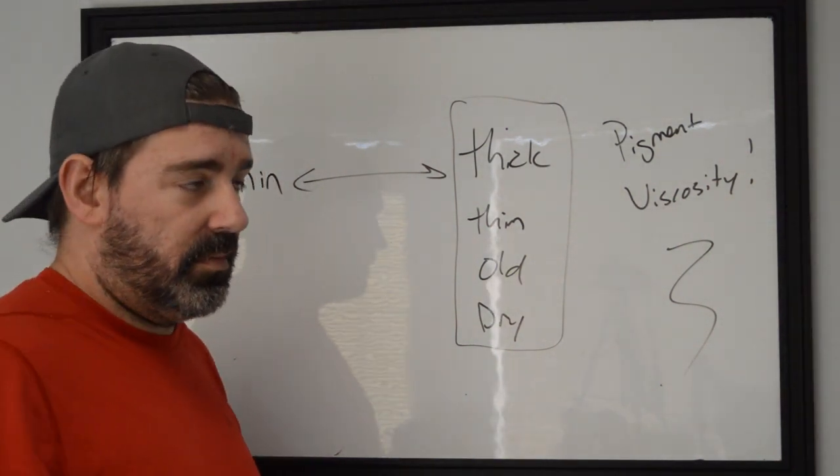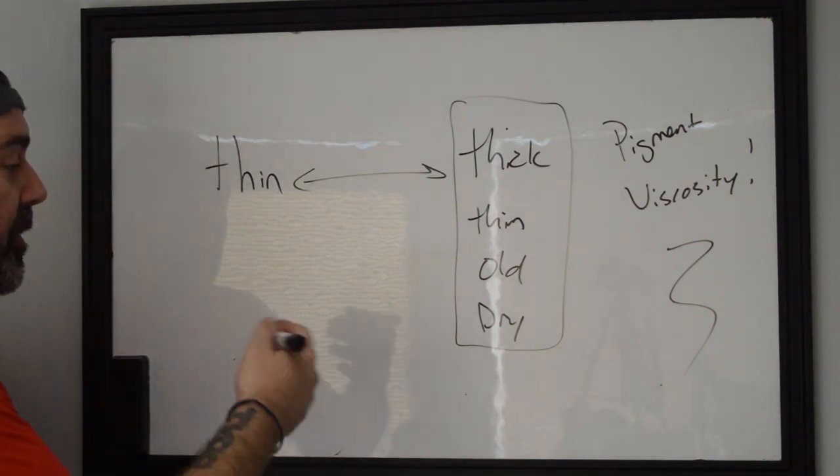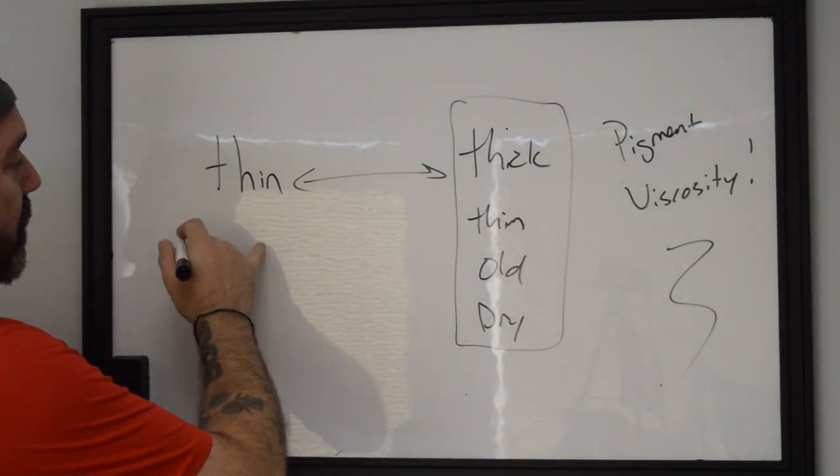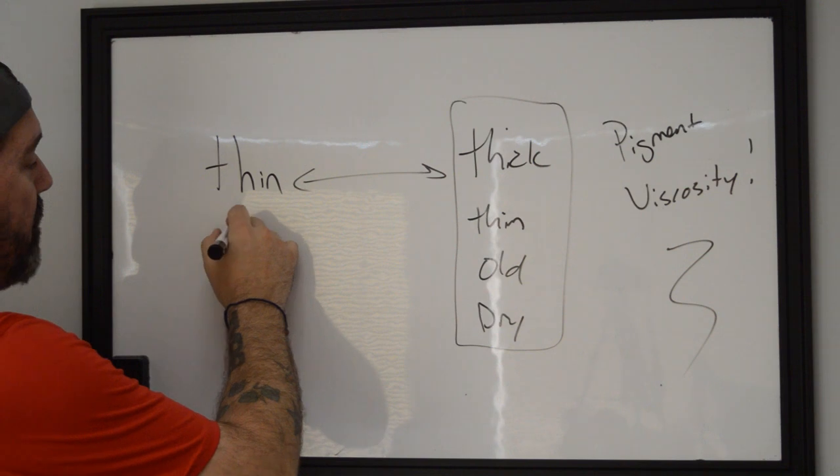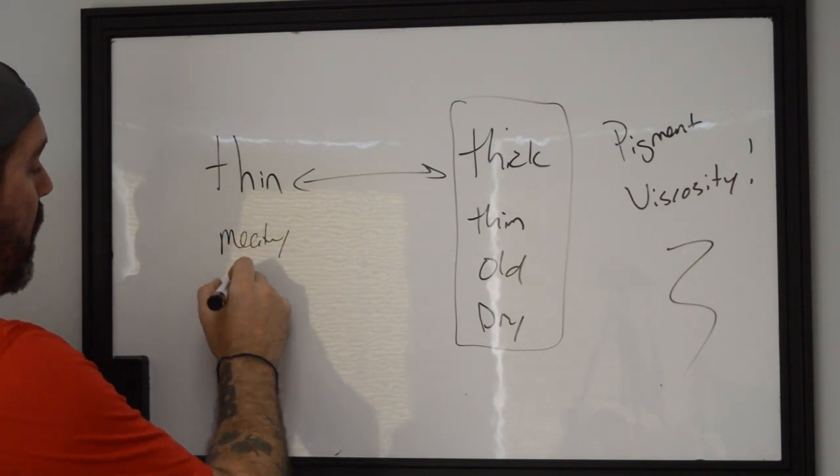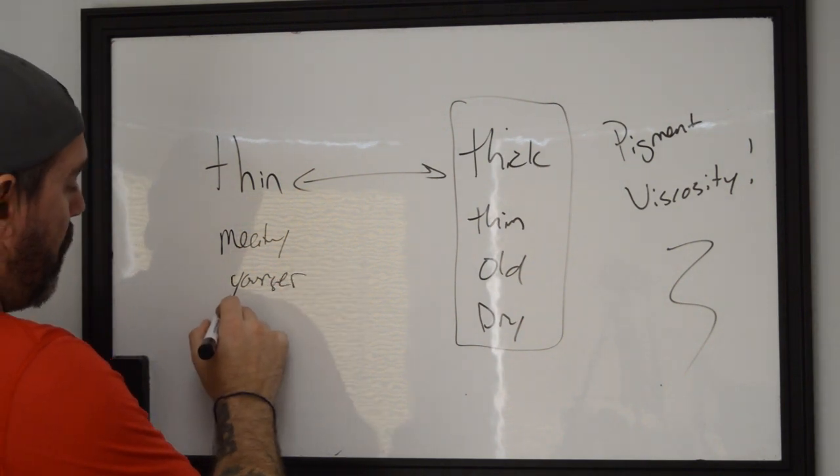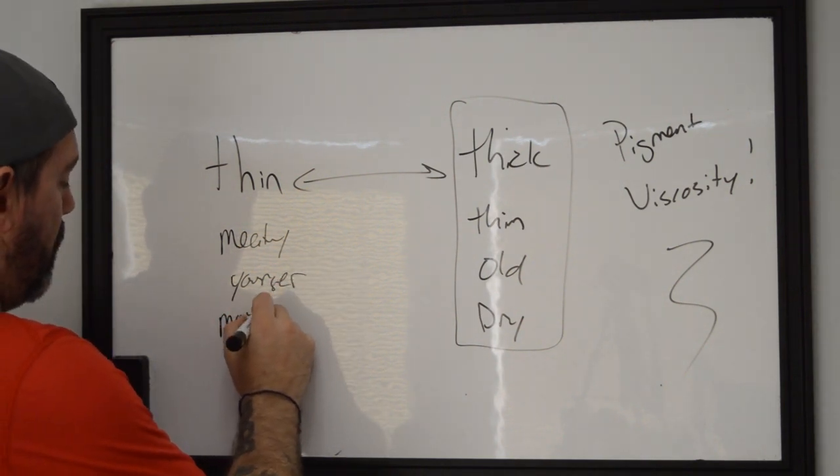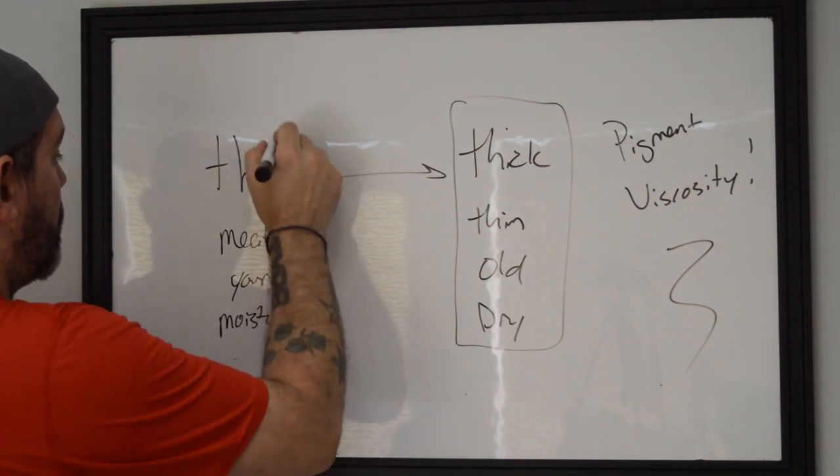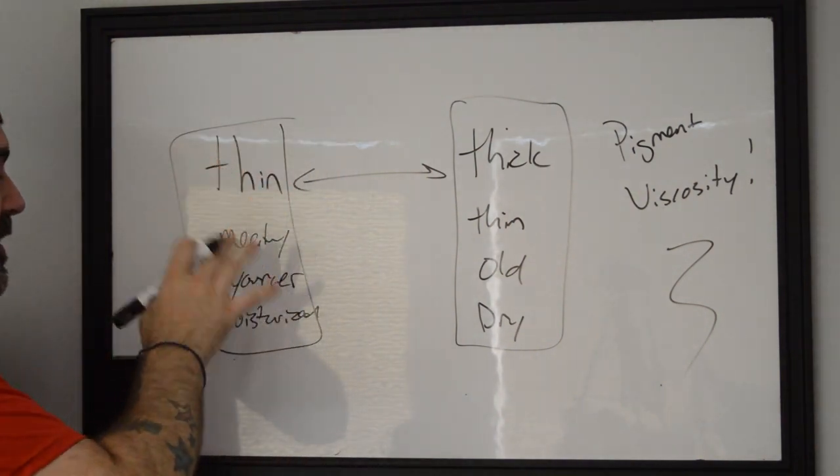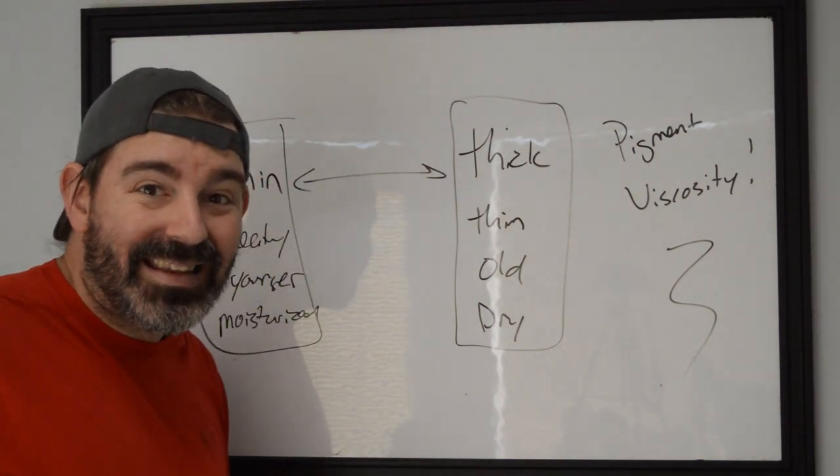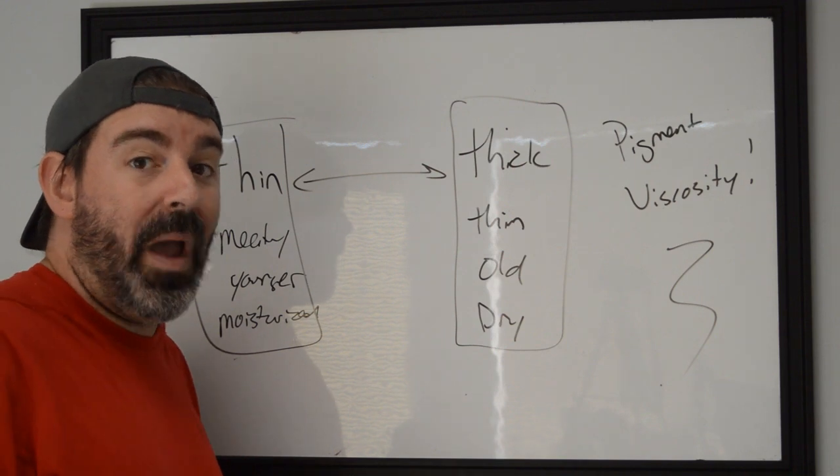On the opposite one, with thinner pigments we're going to have the meatier spots of the body, we're going to use them on younger skin and skin that is well moisturized.